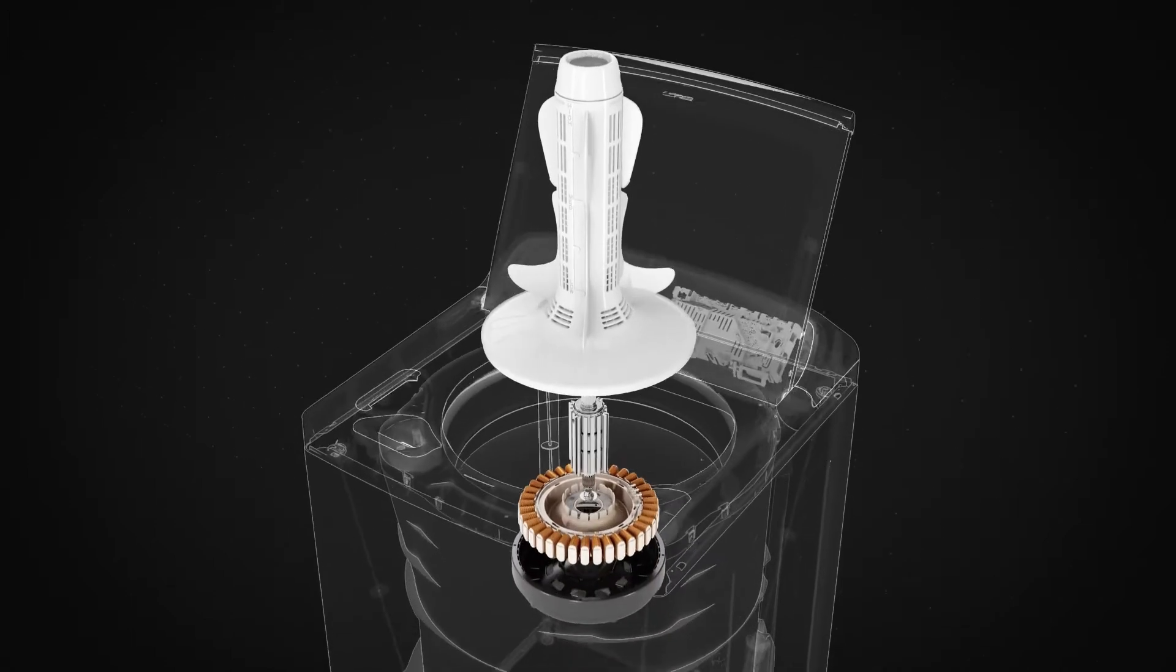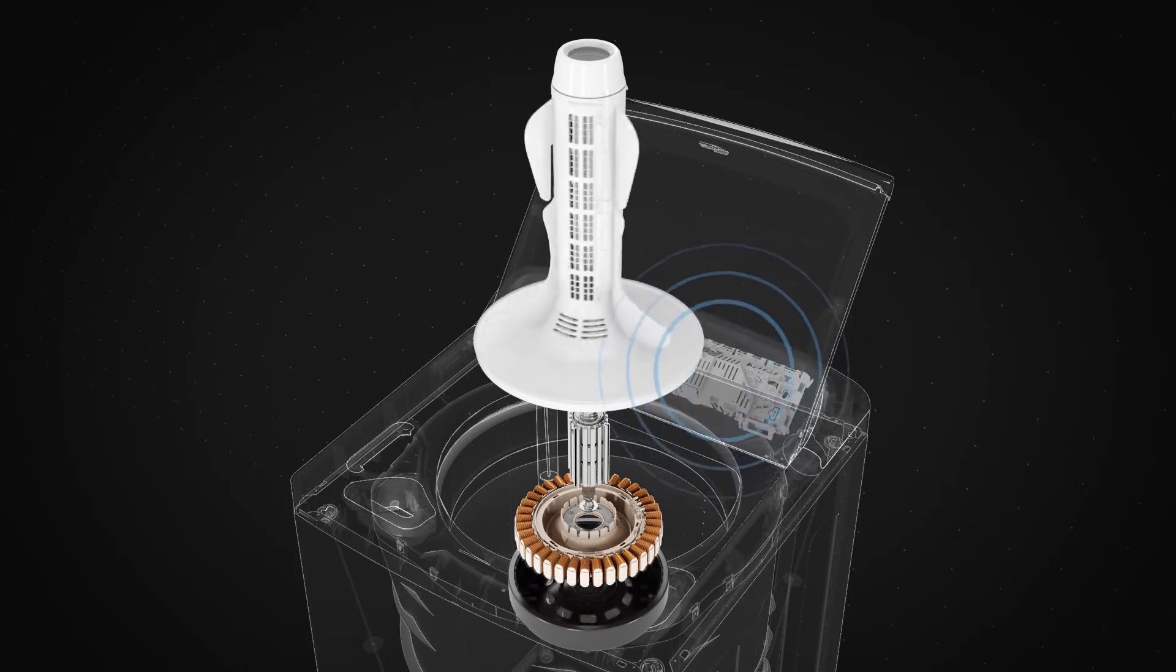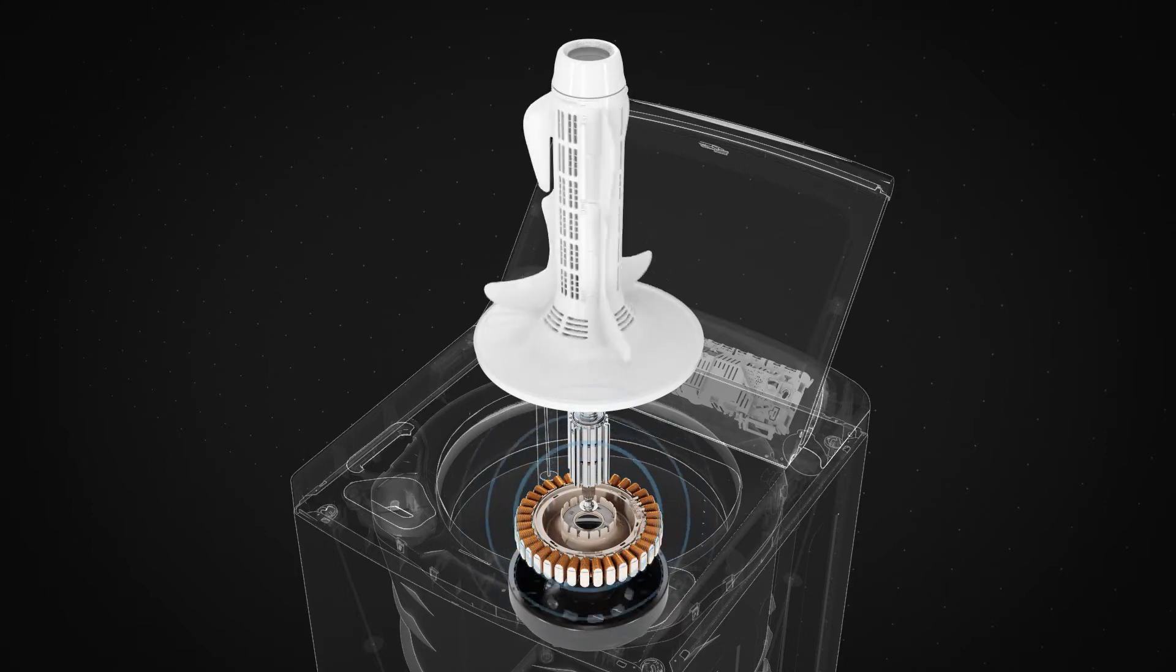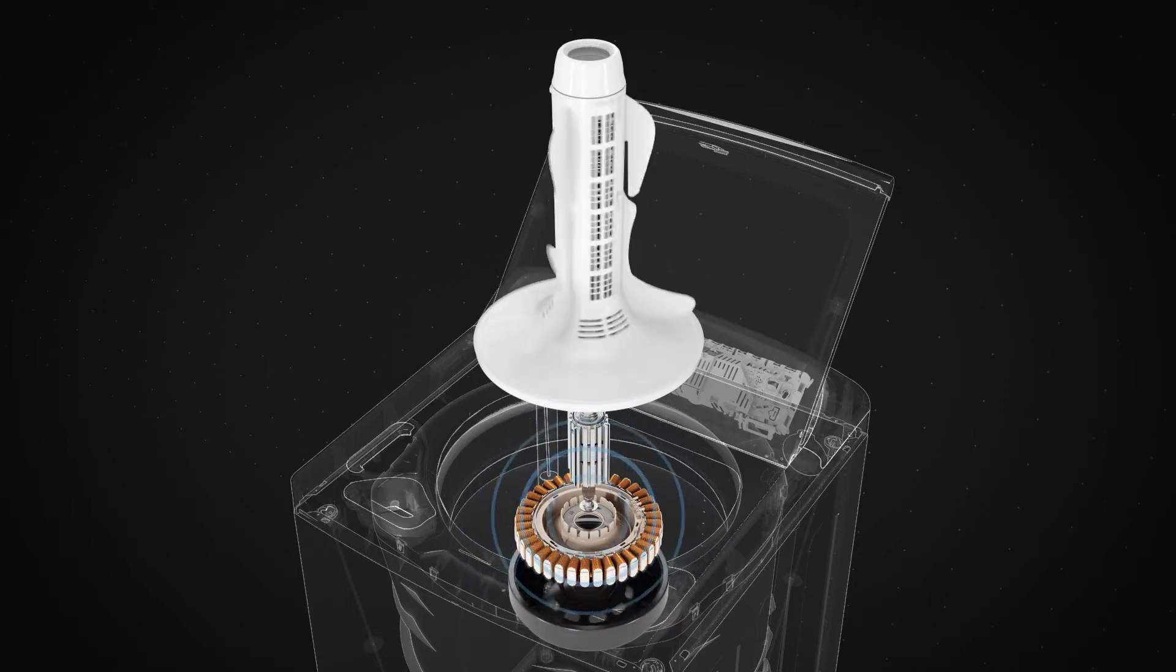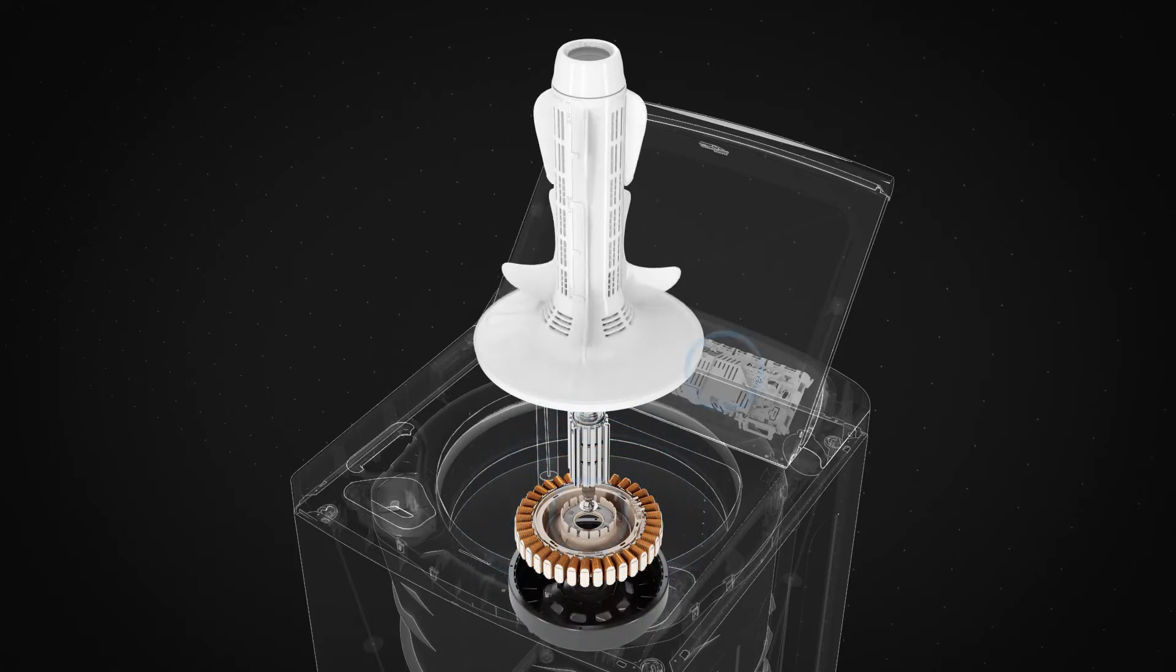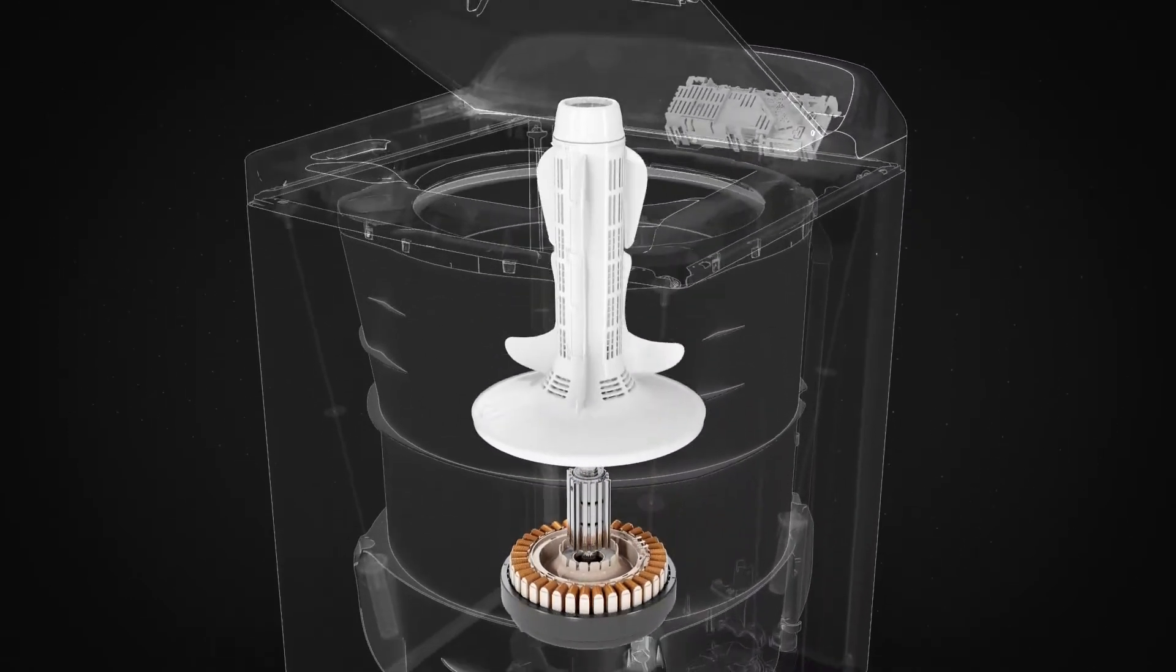The computer controls how the motor operates, including the speed, length, and gentleness of each agitator stroke. The computer receives continuous feedback from the motor, which allows it to determine what's happening within the wash. Constant two-way communication means our washers can respond to changes in every load.